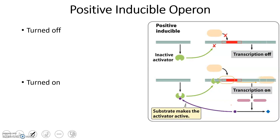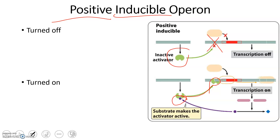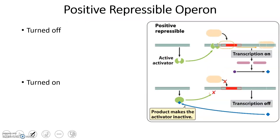For a positive inducible operon, positive means it has an activator and inducible means it's off but you can turn it on. When off, the activator is not on the DNA so transcription is not occurring. An effector molecule binds to the activator, changes the shape, and allows the activator to bind to the DNA, increasing the rate of transcription. For a positive repressible operon, the activator is on the DNA and transcription is occurring. An effector binds to the activator, causes a conformational change, makes it fall off the DNA, and transcription stops.